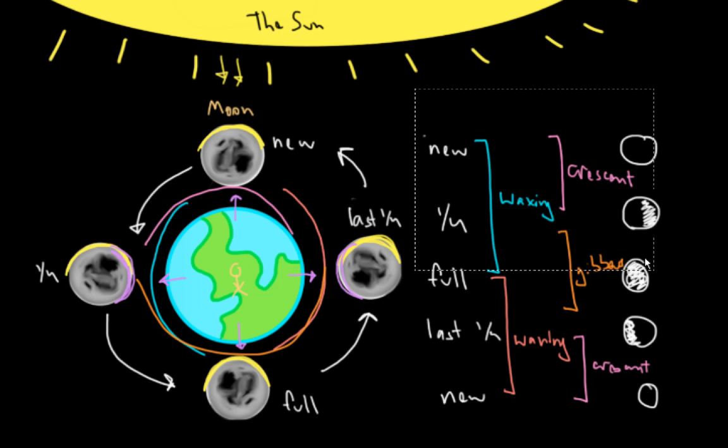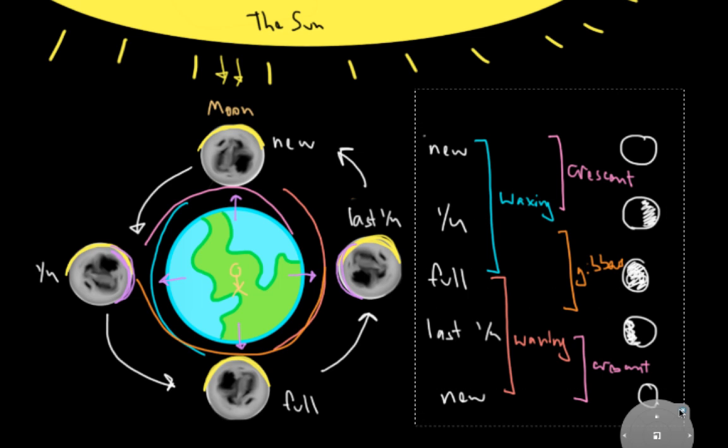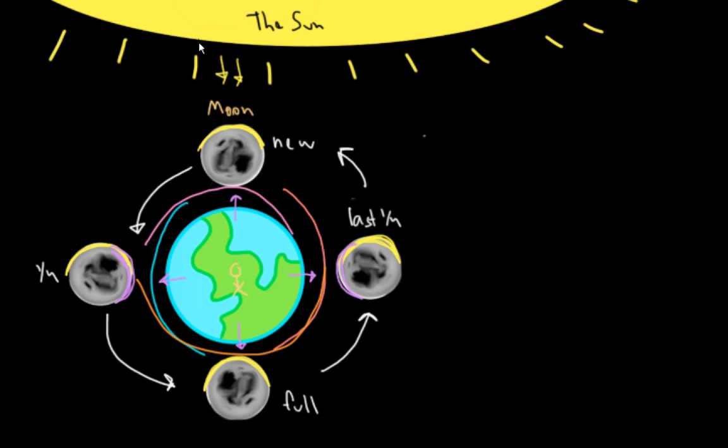So now that we've got our lunar cycle down, I'm just going to go ahead and delete this chart of words over here on the right because what I want to talk about now is the length of this cycle. And it turns out that one of these cycles, going from new moon all the way around to new moon again, takes about 29 and a half days. So we'll say 29.5 days.